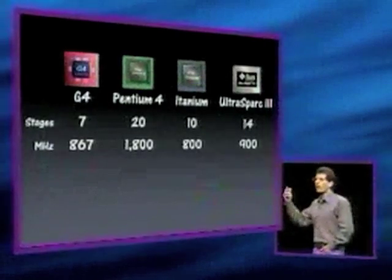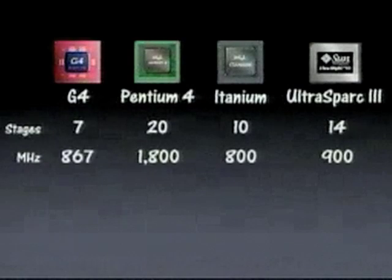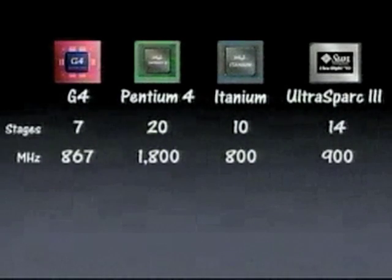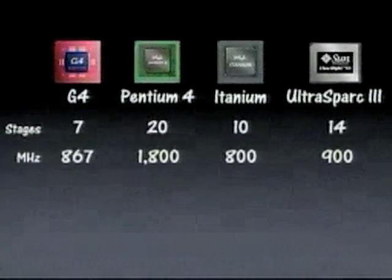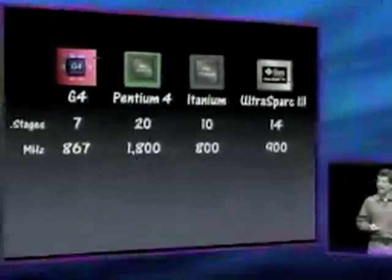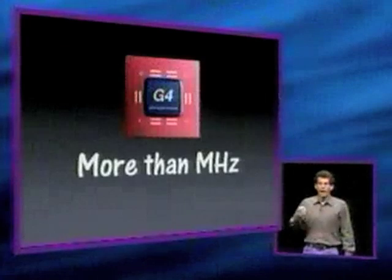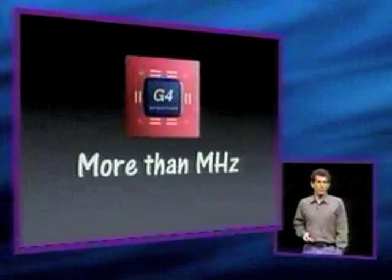Going back to compare our four processors: the Pentium 4 runs at 1.8 gigahertz with 20 pipeline stages. The Itanium, Intel's next generation processor, chose to go with only 10 pipeline stages and runs at 800 megahertz. The Ultra Spark 3 has 14 pipeline stages and runs at 900 megahertz. The G4 is an extremely efficient design with only seven pipeline stages, yet runs at the same speed as other processors with much longer pipelines. I hope this helps you understand that performance is more than just megahertz, and that you're not fooled by the megahertz myth.